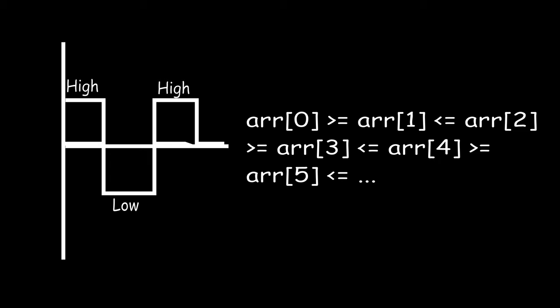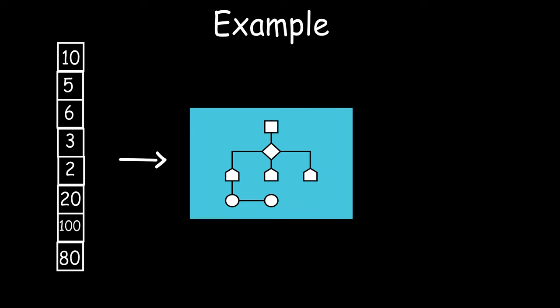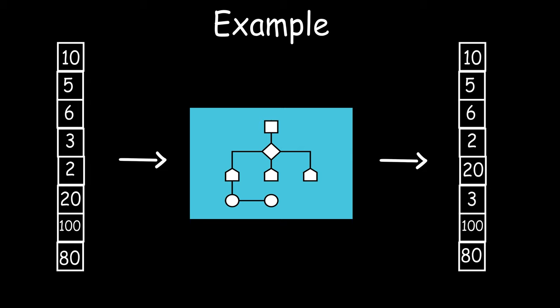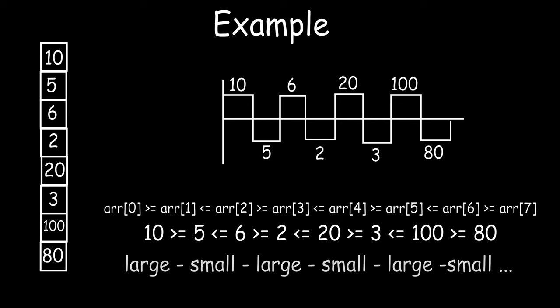Similarly, the third element should be greater than the fourth element, and so on. For example, given input array [10, 5, 6, 3, 2, 20, 100, 80], the algorithm should output [10, 5, 6, 2, 20, 3, 100, 80]. In simple terms, the output array should follow a pattern of large, small, large, small, and so on.